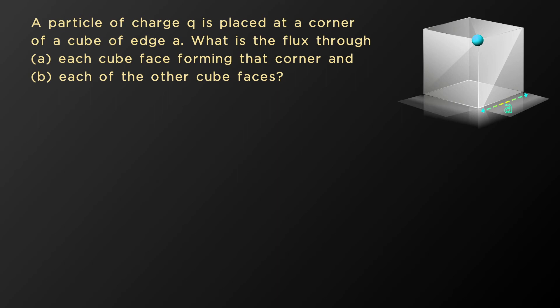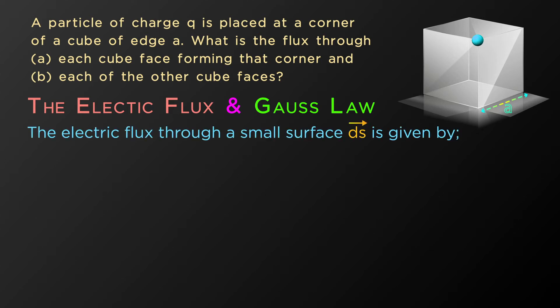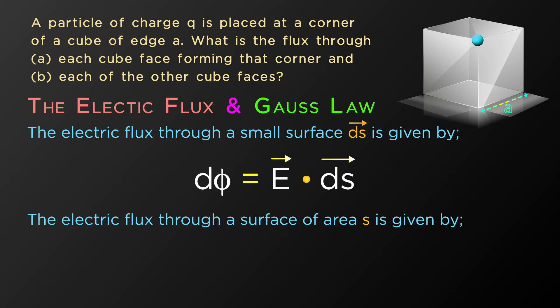To solve this problem, you must have an idea of electric flux and Gauss's law. The electric flux through a small surface dS is given by dΦ = E · dS, where E is the electric field through the surface dS. The electric flux through a surface of area S is given by Φ equal to the surface integral of E · dS.